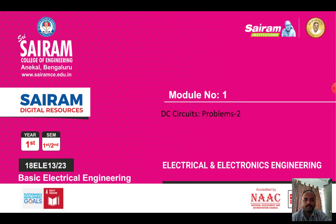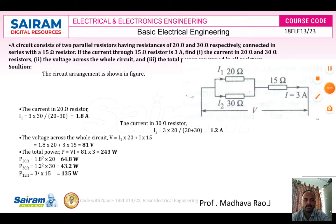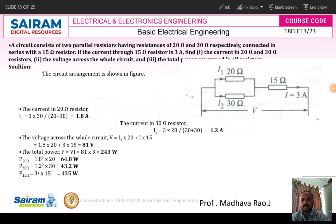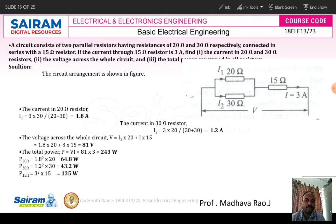Coming to the first problem: a circuit consisting of two parallel resistances having a resistance of 20 ohm and 30 ohm respectively, connected in series with a 15 ohm resistor. If the current through the 15 ohm resistor is 3 amperes, find the current in the 20 ohm and 30 ohm resistors, the voltage across the whole circuit, and the total power consumed in all the resistors.